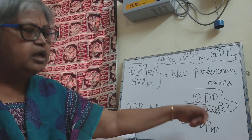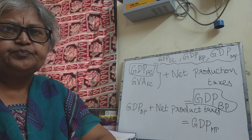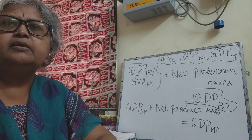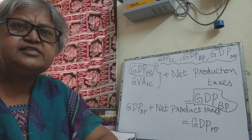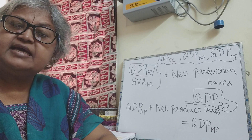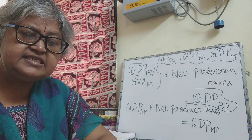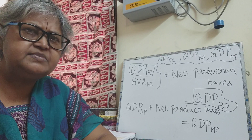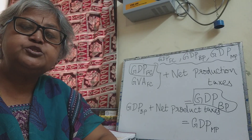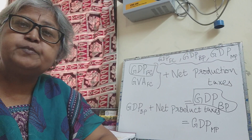GDPFC plus net production taxes gives the gross domestic product at basic price. Now over and above this, there is the net product tax concept. As the very word tells you, net product tax is levied on the products and services, based on per unit of output. So the volume of output matters - as the volume of output increases, this may increase. It is not a lump sum tax like the production tax. Product tax is based on the volume of output and is levied on the output produced by the firms.